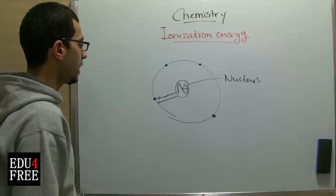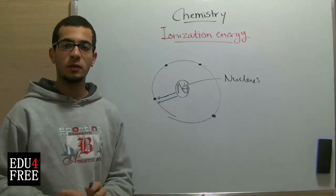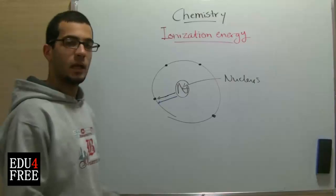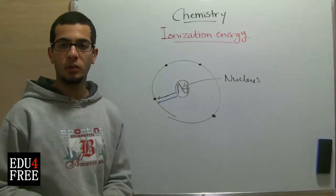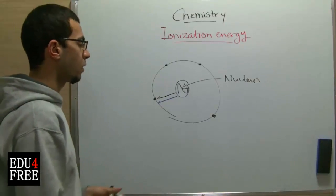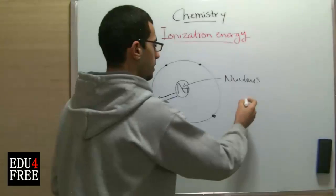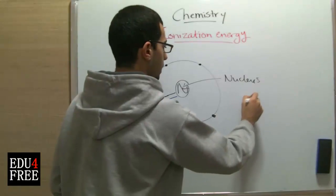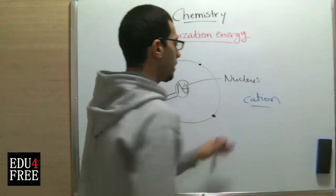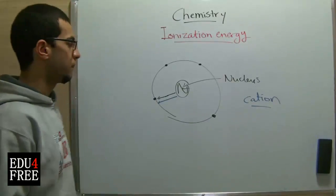So the ionization energy is the amount of energy needed to convert an atom into an ion with a positive charge — or in other words, a cation. A cation is an ion with a positive charge.